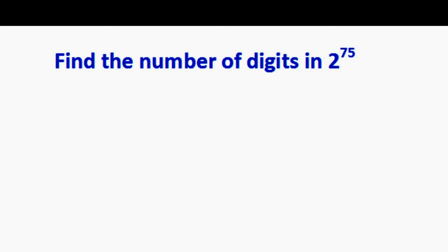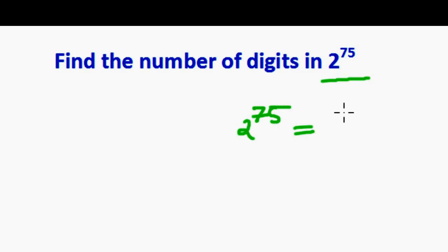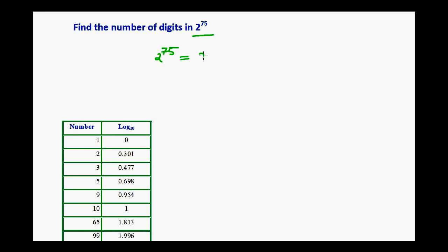The question is: how many digits are there in 2 power 75? We know that 2 power 75 means 2 multiplied by itself 75 times. This is going to be a very big number which we cannot find out by manual multiplication.